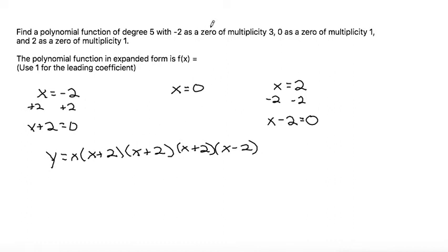So that was a multiplicity of 3, a multiplicity of 1 for the x, and a multiplicity of 1 for the x minus 2. This is a degree 5 polynomial because we have 1, 2, 3, 4, 5 factors of x in our polynomial. It also says to use 1 for the leading coefficient, so we could put a 1 in the front here, but that doesn't really change anything. It just defines what our leading coefficient is going to be.